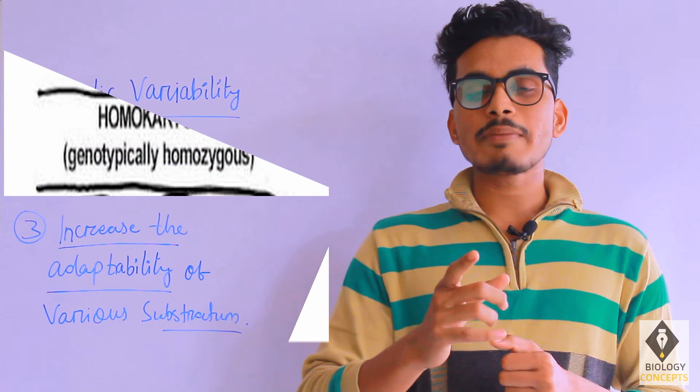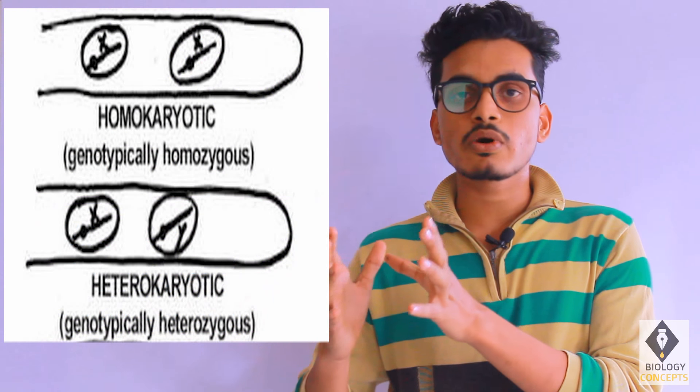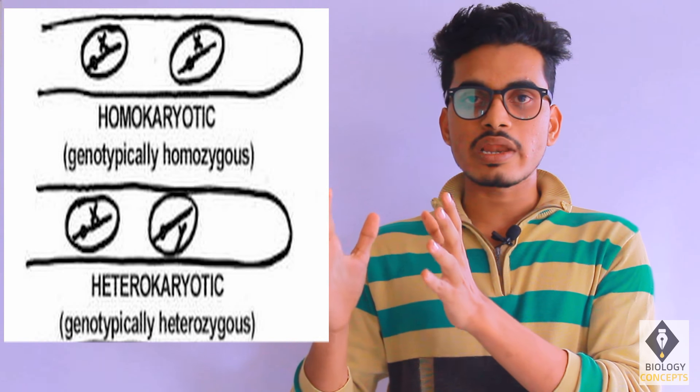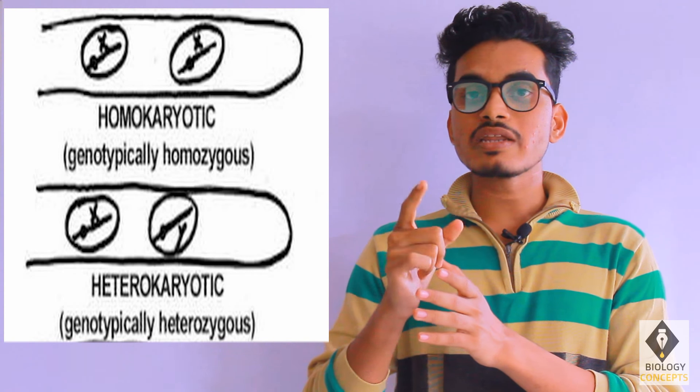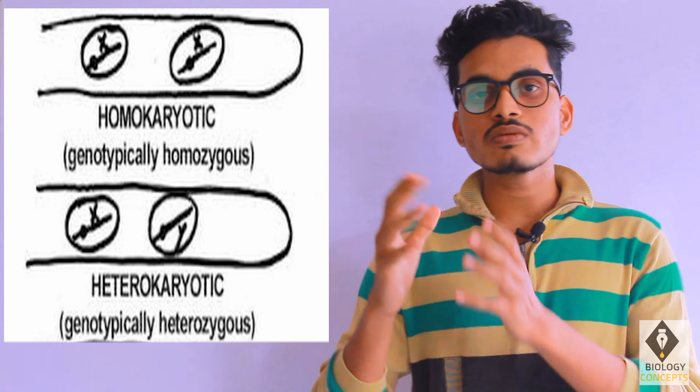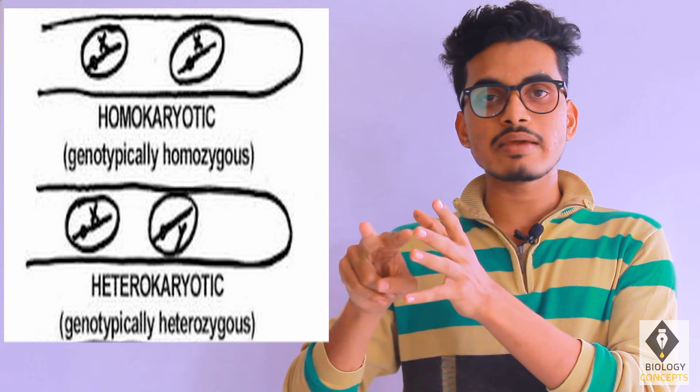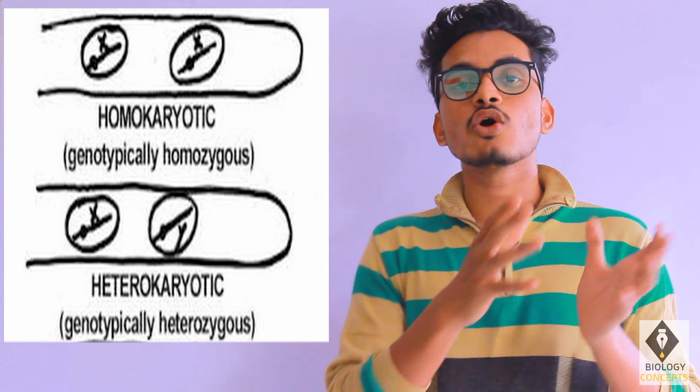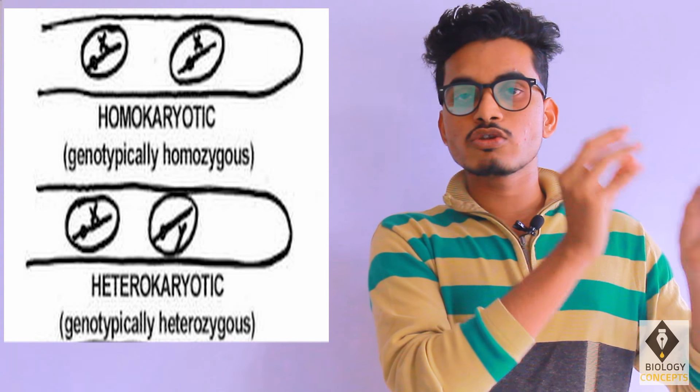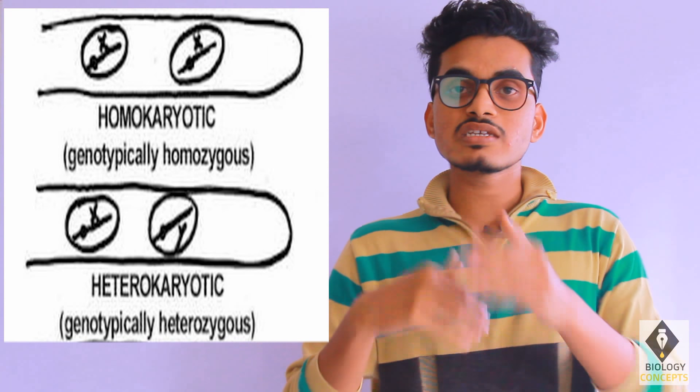Homokaryon is the same as heterokaryon. In the case of homokaryon, we have one cell that contains two nuclei, but those two nuclei are from the same species. That's why they are called homo. In the case of heterokaryon, the two nuclei are from different species. That is the reason why we are calling it hetero.